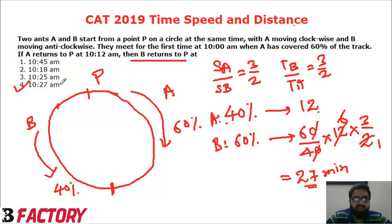Also, since B is covering additional distance of 3 by 2 compared to A, we have to multiply with 3 by 2 again. 12 into 3 by 2 into 3 by 2 will get 27.